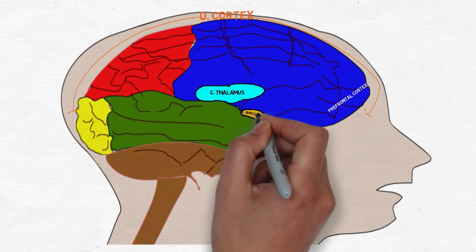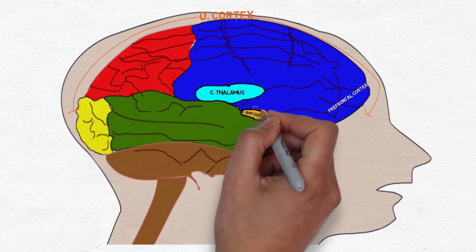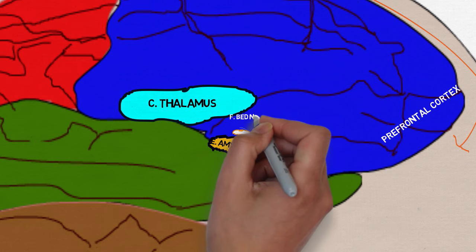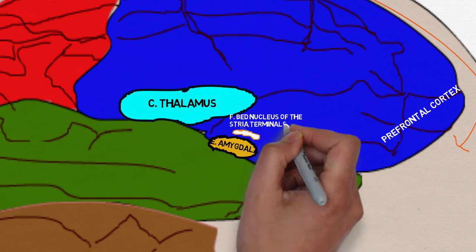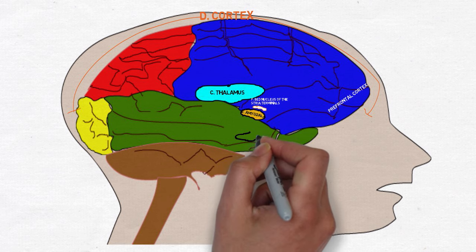The amygdala is the emotional core of the brain whose primary role is to trigger the fear response. Information passing through the amygdala is associated with an emotional significance. The bed nucleus of the stria terminals is particularly interesting when we discuss anxiety. While the amygdala sets off an immediate burst of fear, the BNST perpetuates the fear response causing longer term unease, typical of anxiety.